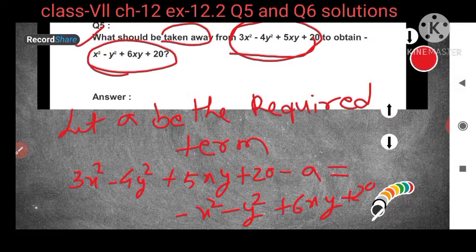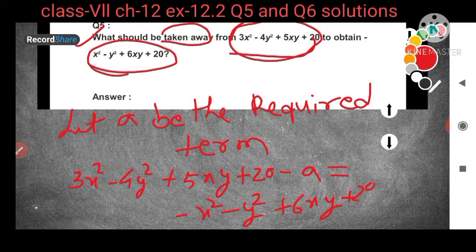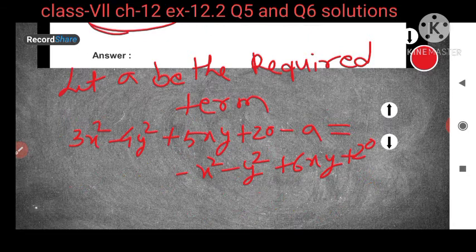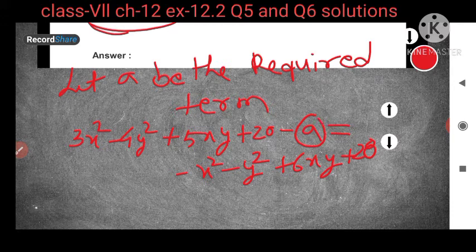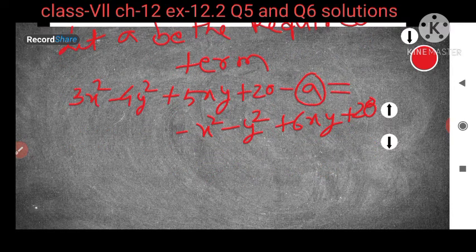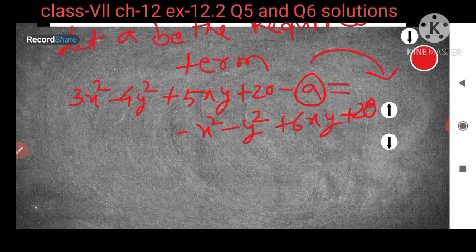So this a we have to subtract, then we will get this value. Now we have to find the value of a. This a is in minus, so this a I will transpose to the right hand side. It will become plus. Then again I will write in an alternative way — first I will write the right hand side here.